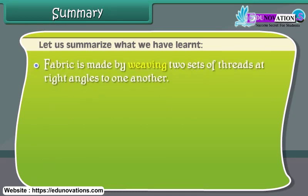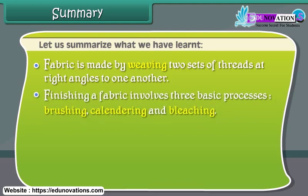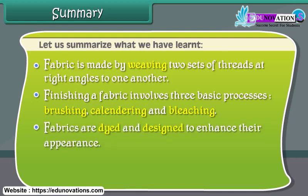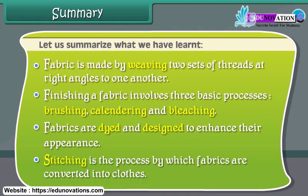Fabric is made by weaving two sets of threads at right angles to one another. Finishing a fabric involves three basic processes: brushing, calendaring, and bleaching. Fabrics are dyed and designed to enhance their appearance, and stitching is the process by which fabrics are converted into clothes.